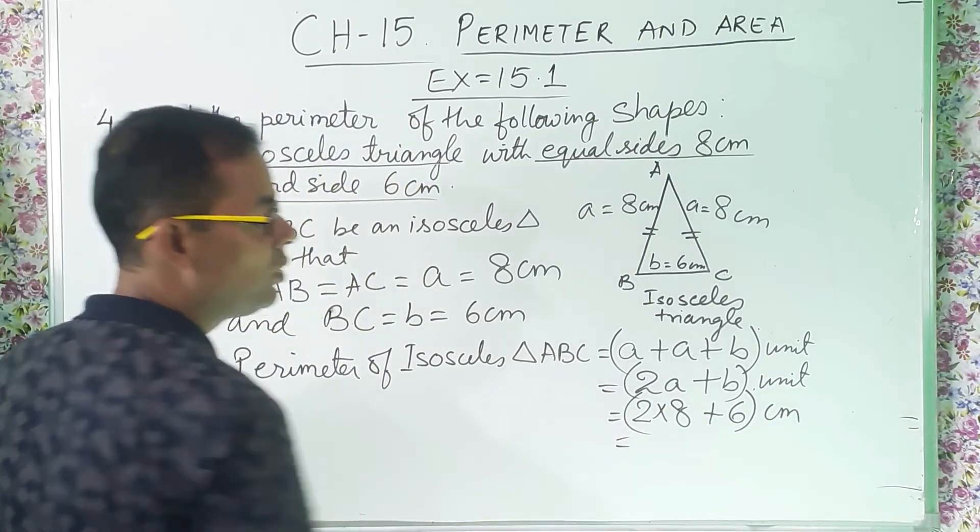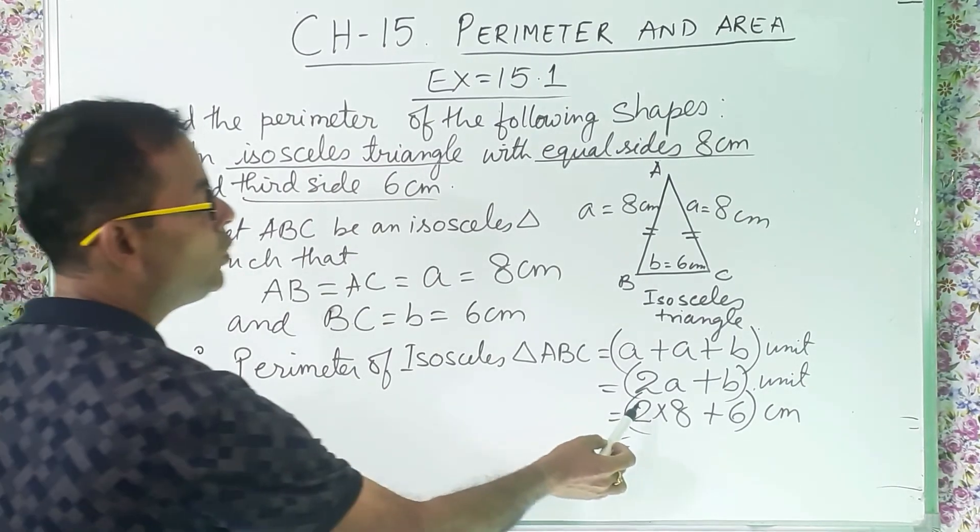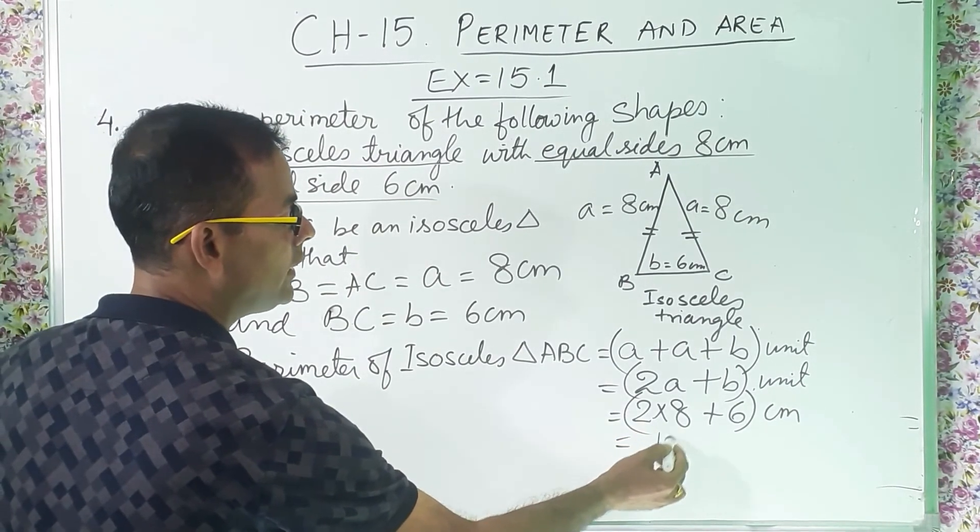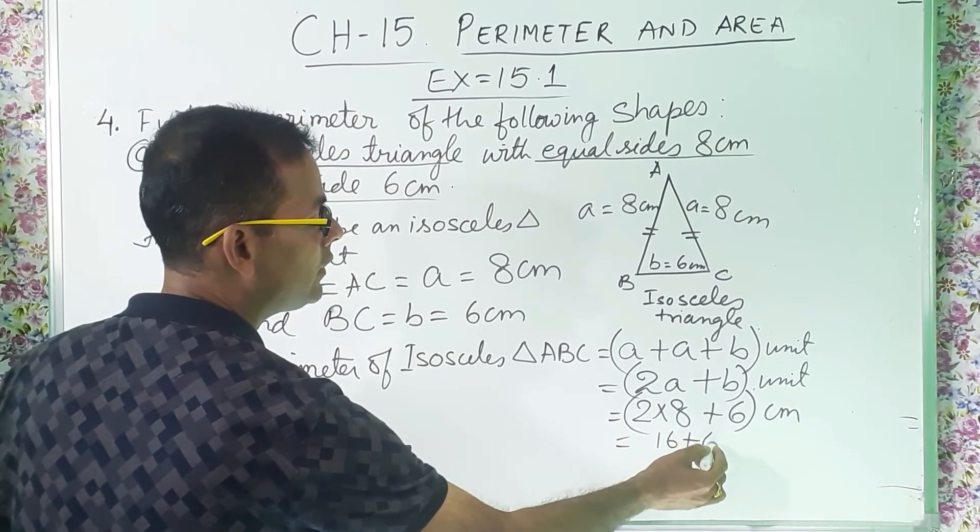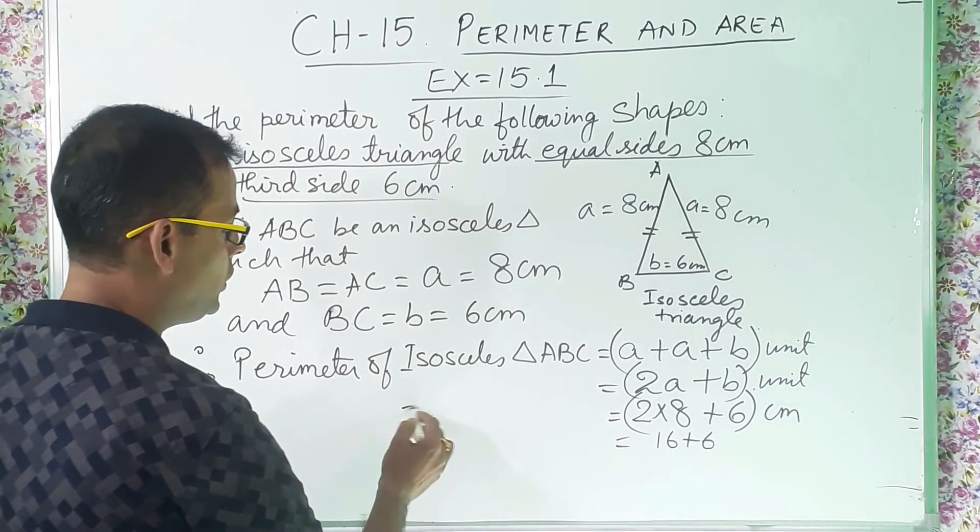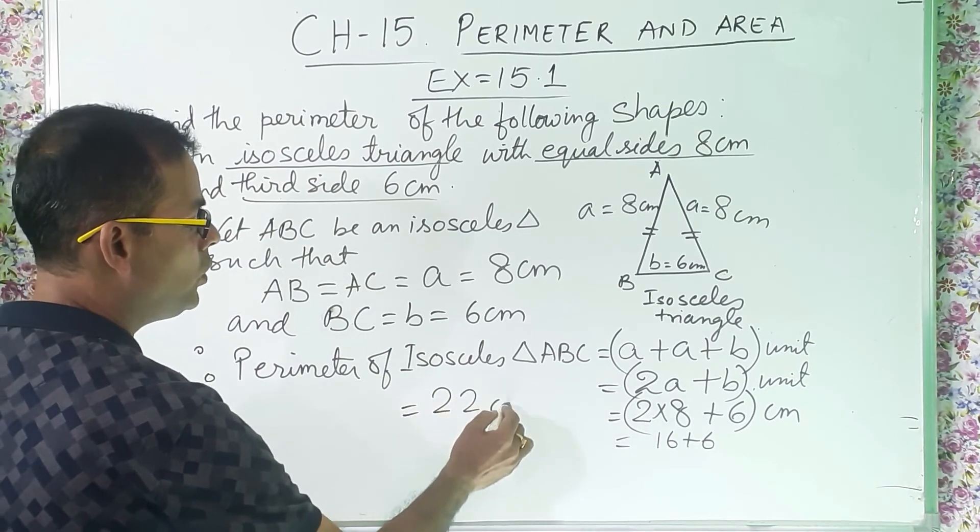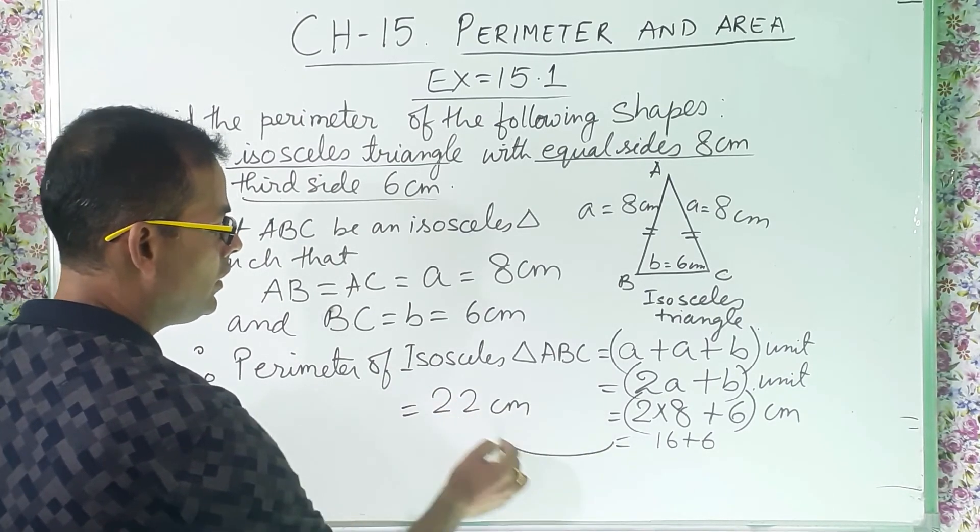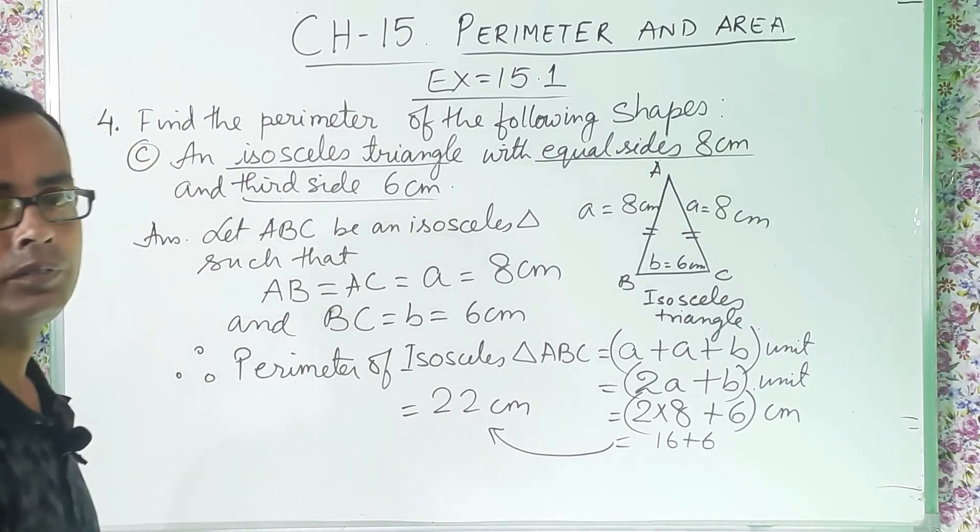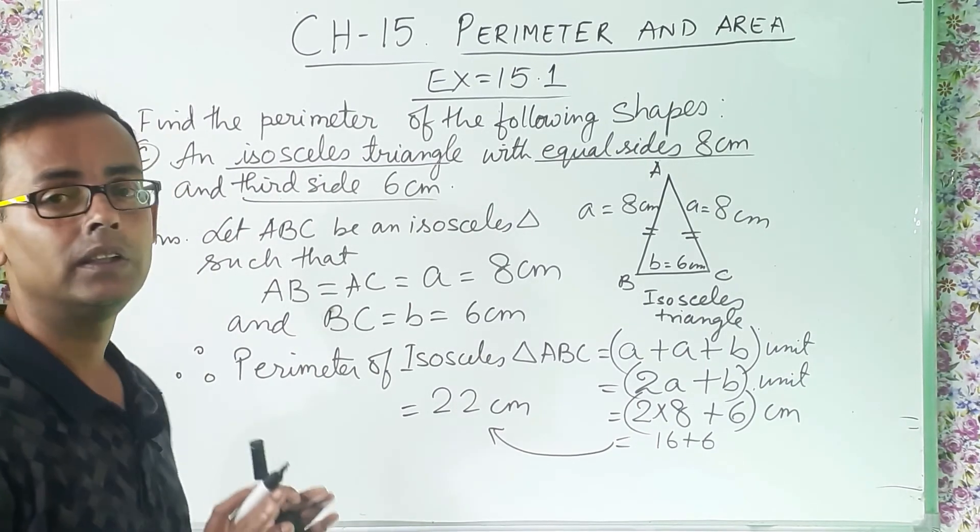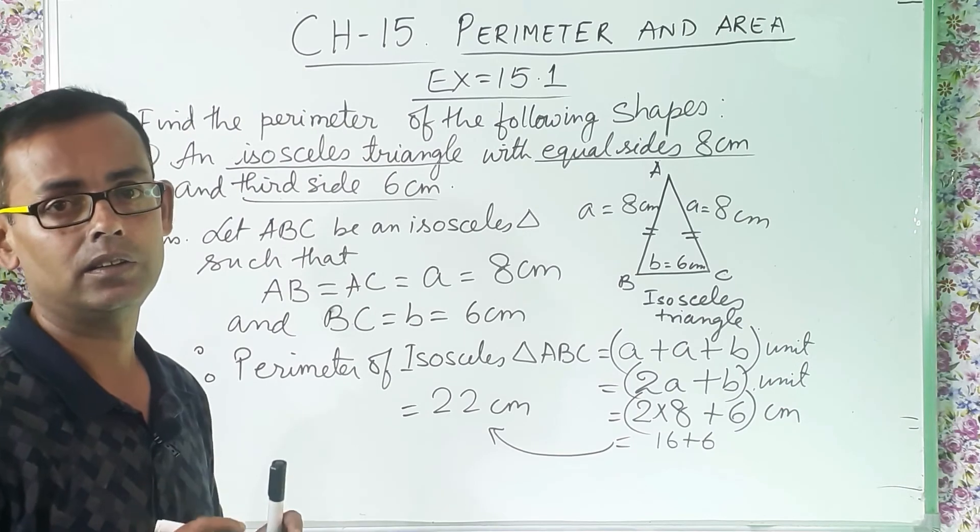2 into a is how much? And b is how much? 6. And it is centimeter. So you got it? Now 2 into 8, 16 plus 6. And how much you get? 16 plus 6, 22 centimeter. Can you see? So I think up to this much it is clear.